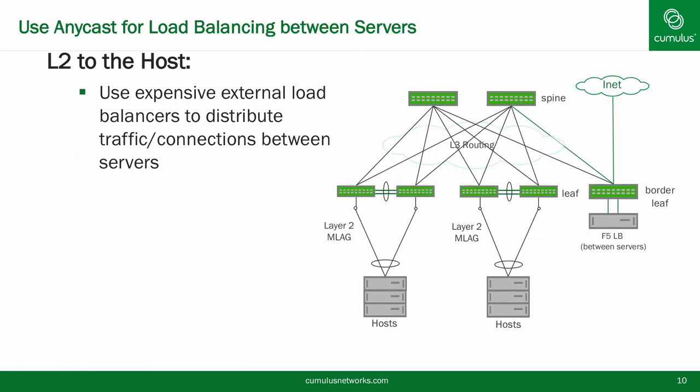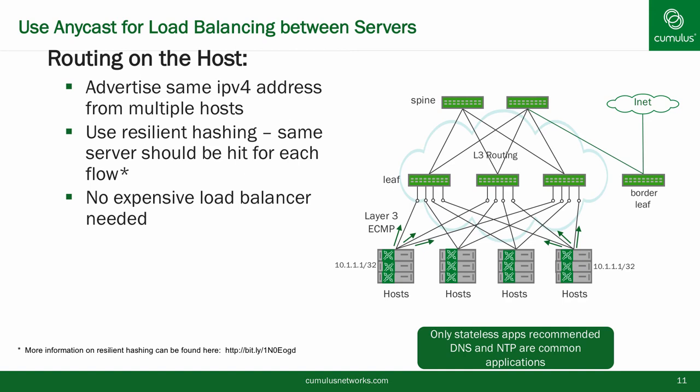With Layer 2 to the host, in order to load balance traffic, expensive load balancers are needed to distribute the flows. However, with routing, it is possible to use Anycast to help load balance between servers. By assigning the same IP address to two or more servers and using ECMP routing, we can distribute the load between the servers automatically. Each switch in the path will perform a hashing and determine the exit point, which will not change during the flow, thus ensuring the flow remains with the same server. Resilient hashing ensures that if a link goes down, the flows won't be rehashed.